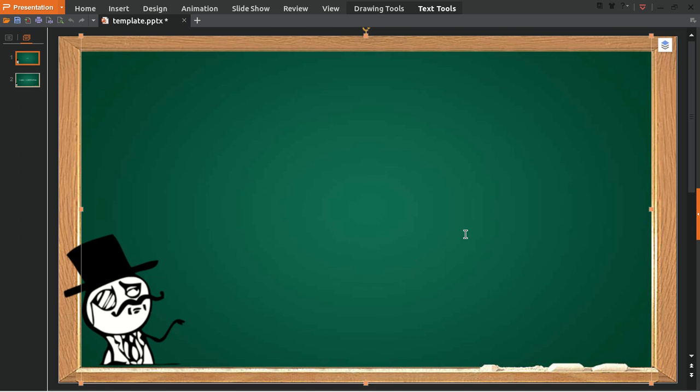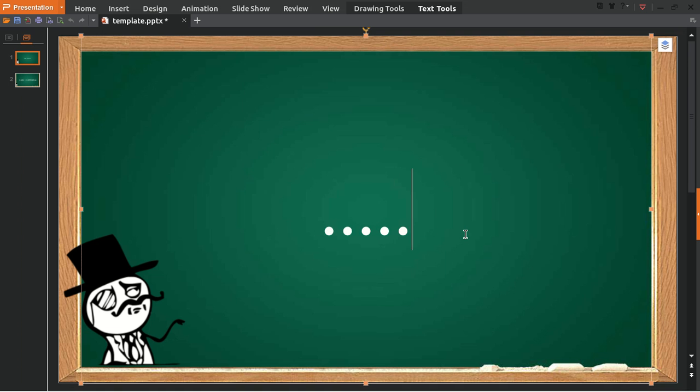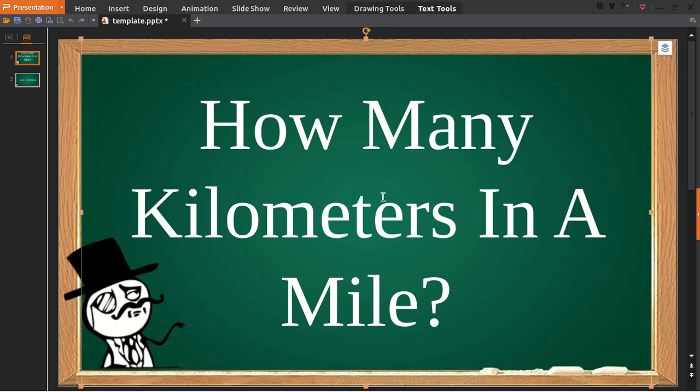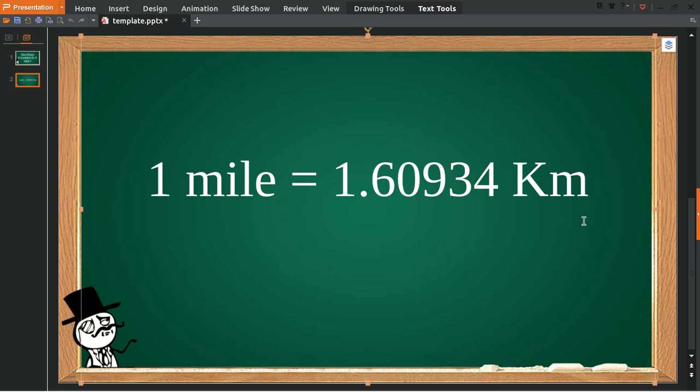Hello everyone, in today's video we're going to answer a question: how many kilometers are in a mile? Here's the answer - one mile is equal to 1.60934 kilometers. Now, how about if